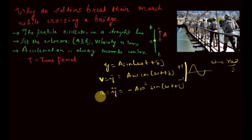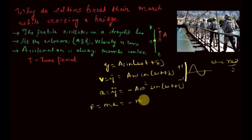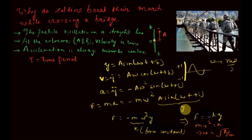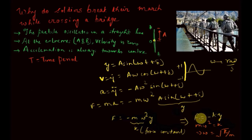Multiplying acceleration by mass M gives the force: F = −Mω² A sin(ωt + δ). Since A sin(ωt + δ) = y, the force becomes F = −Mω²y. Defining k = Mω², we get F = −ky. The force acts opposite to the direction of oscillation and always towards the center. From this, ω = √(k/M).